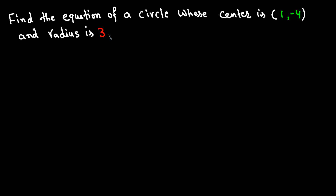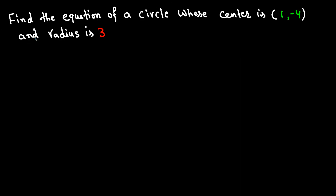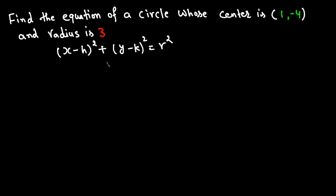First, find the equation of a circle whose center is (1, −4) and the radius is 3. Let me write down the standard equation of a circle: X minus H squared plus Y minus K squared is equal to R squared. You can also derive this equation using the distance formula.